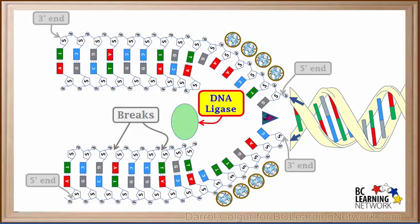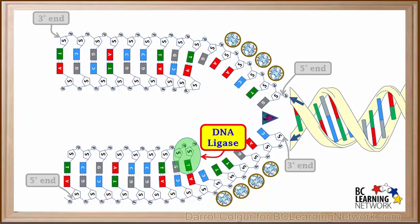This is where yet another enzyme called DNA ligase comes into the process. Like all enzymes, its structure is very complex, so we'll represent it here as a simple green oval. It moves down to the new strand on the bottom, and moves across it repairing the breaks.